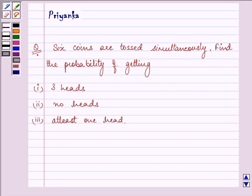Hello friends and how are you all doing today? The question says six coins are tossed simultaneously. Find the probability of getting three heads, no heads, at least one head.